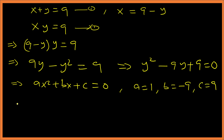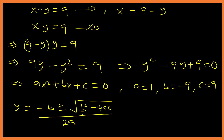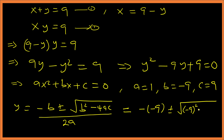So a equals 1, b equals negative 9, and c equals 9. Using the quadratic formula: Y equals negative b plus or minus the square root of b squared minus 4ac, all over 2a. Substituting: negative of negative 9 plus or minus the square root of negative 9 squared minus 4 times 1 times 9, over 2 times 1.